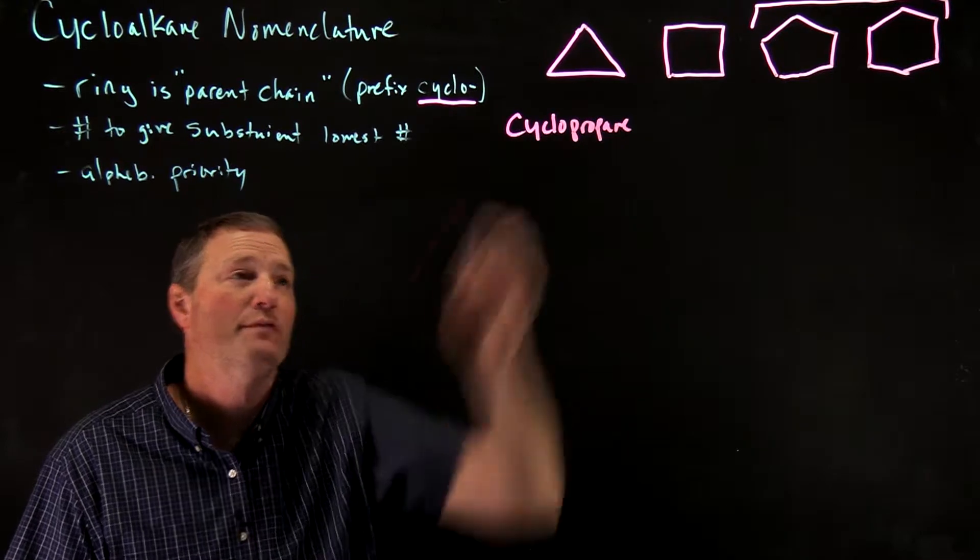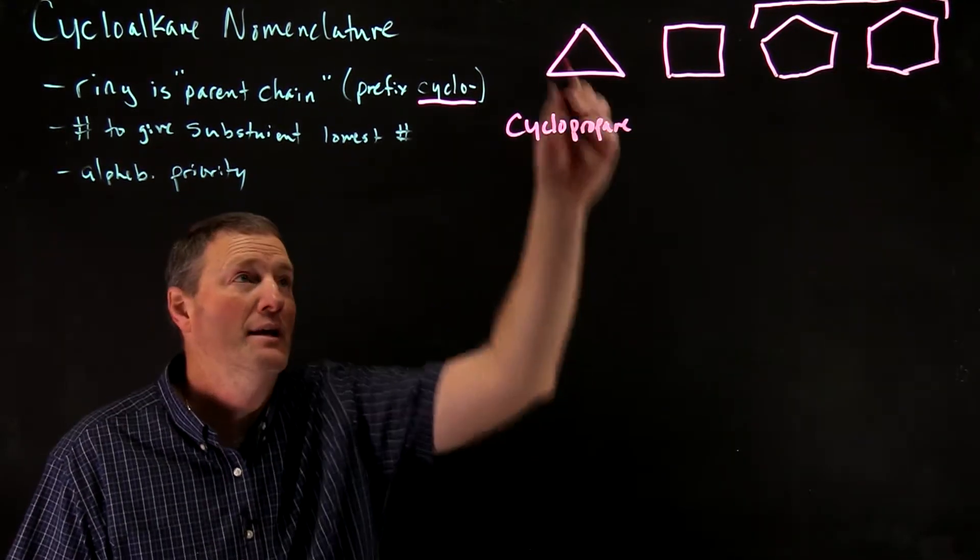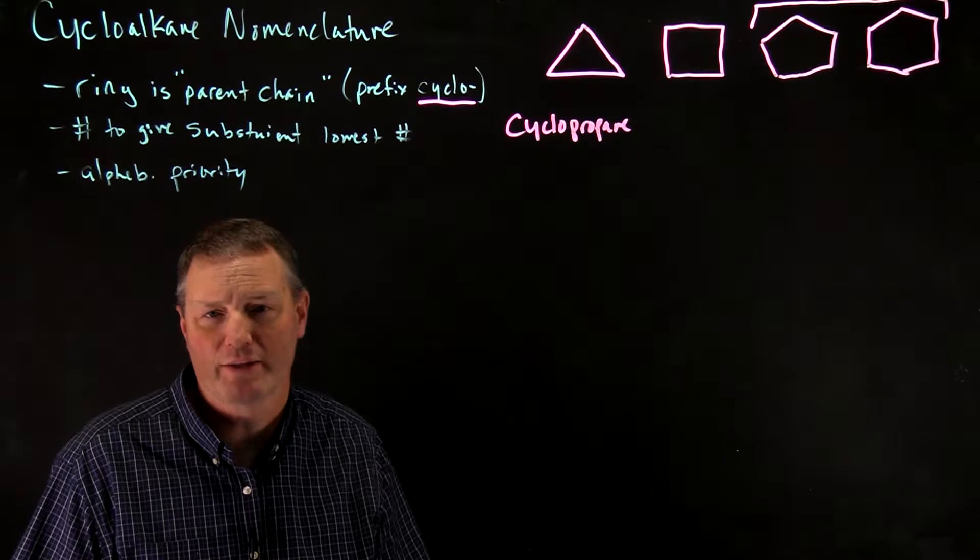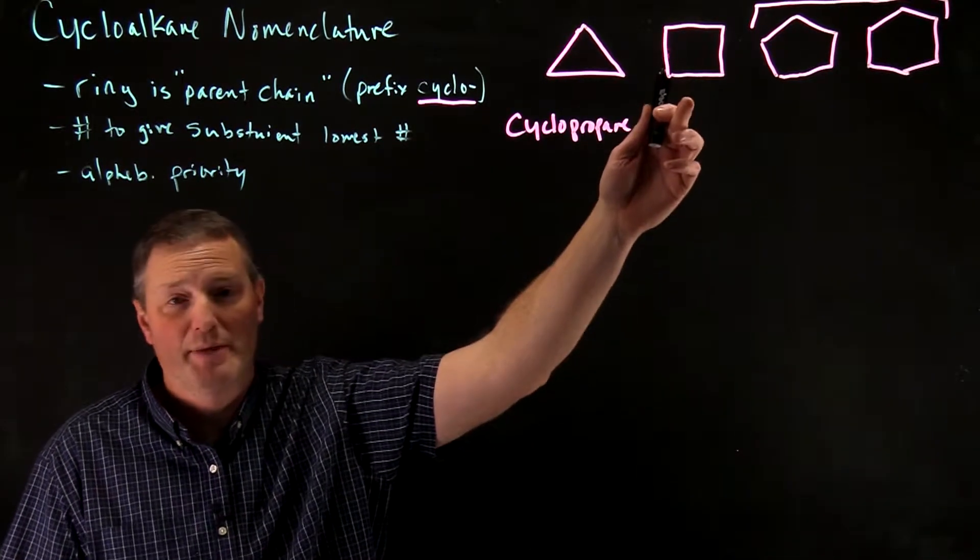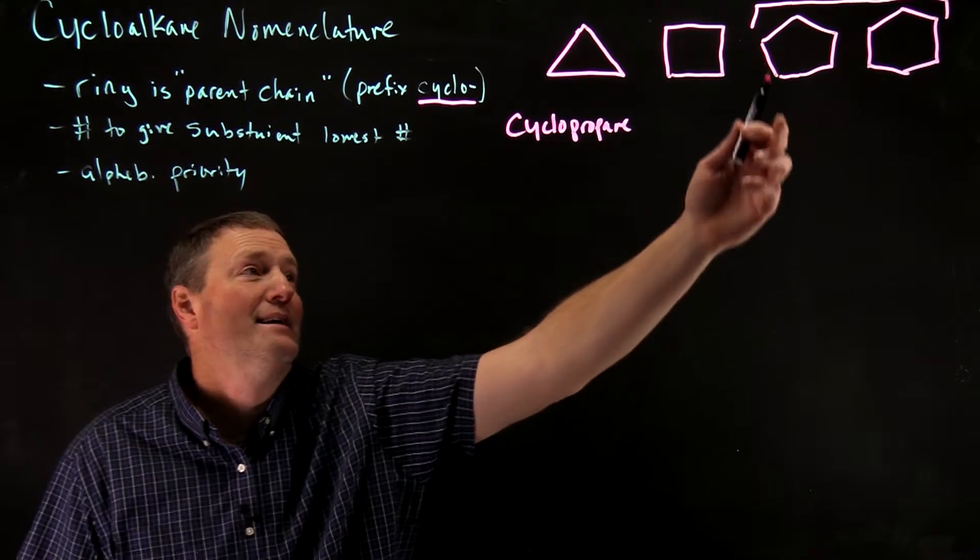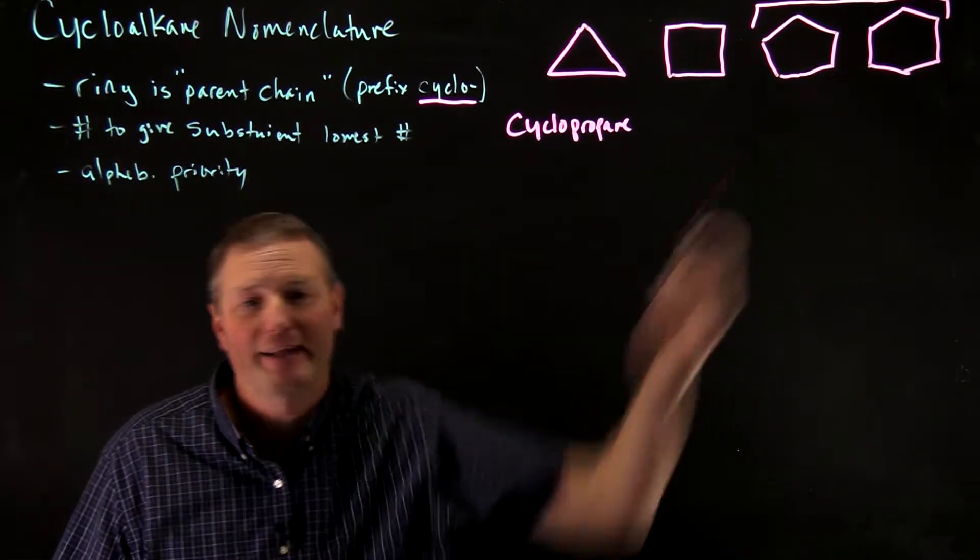So the prefix cyclo is put in front of the chain name, which if it were just a straight chain three-carbon would be propane. Likewise, this would then be cyclobutane, cyclopentane because of five, and then cyclohexane.